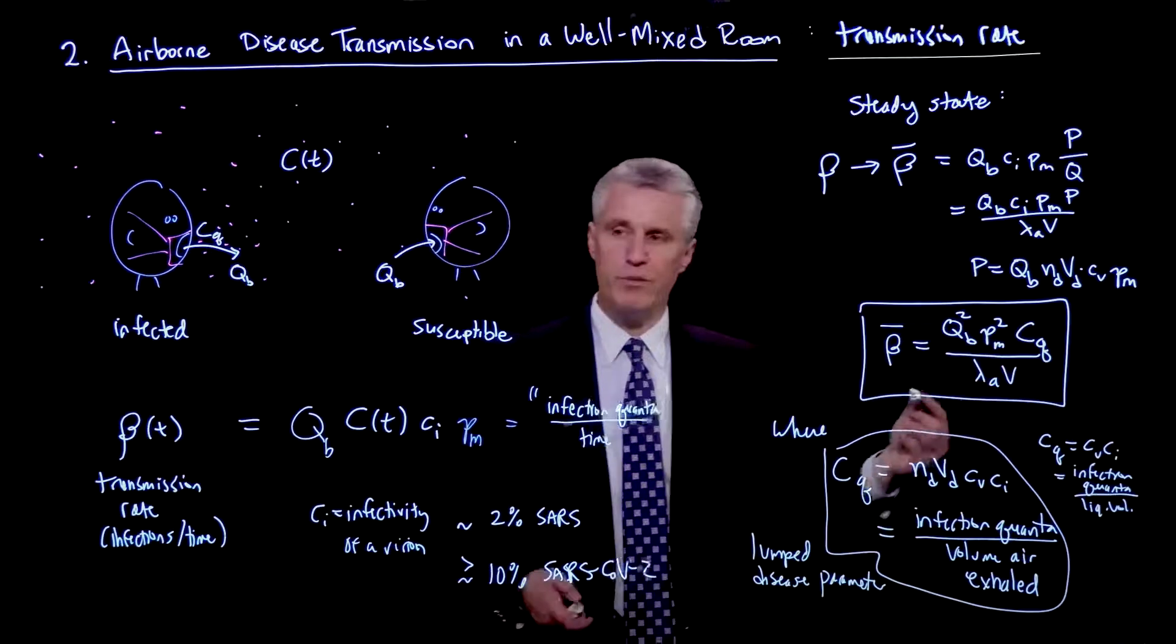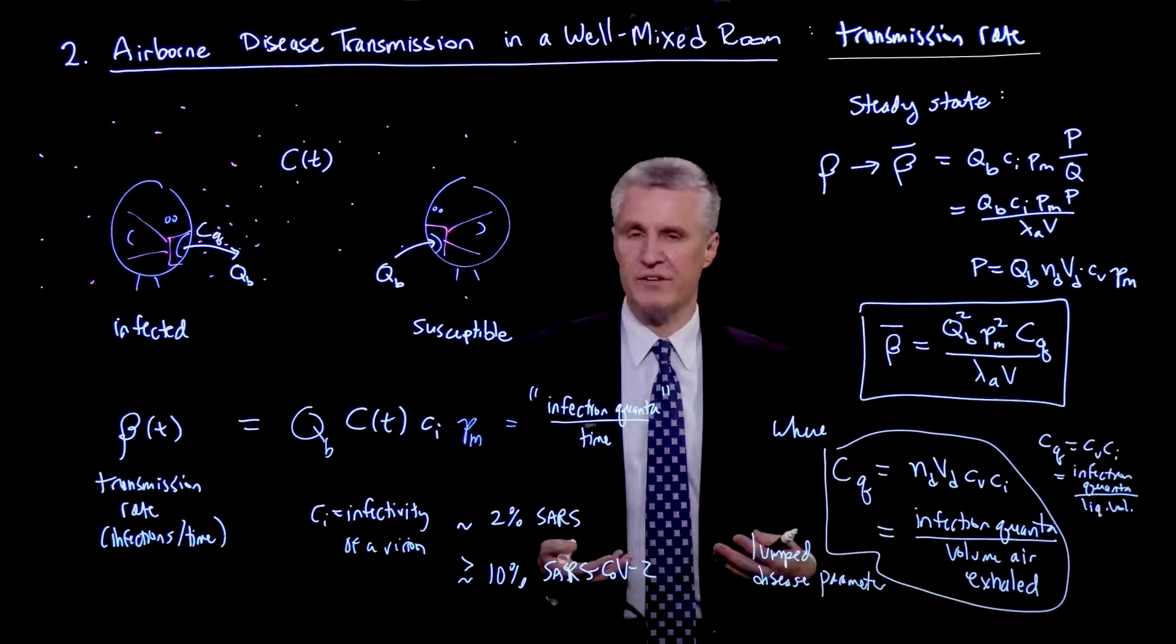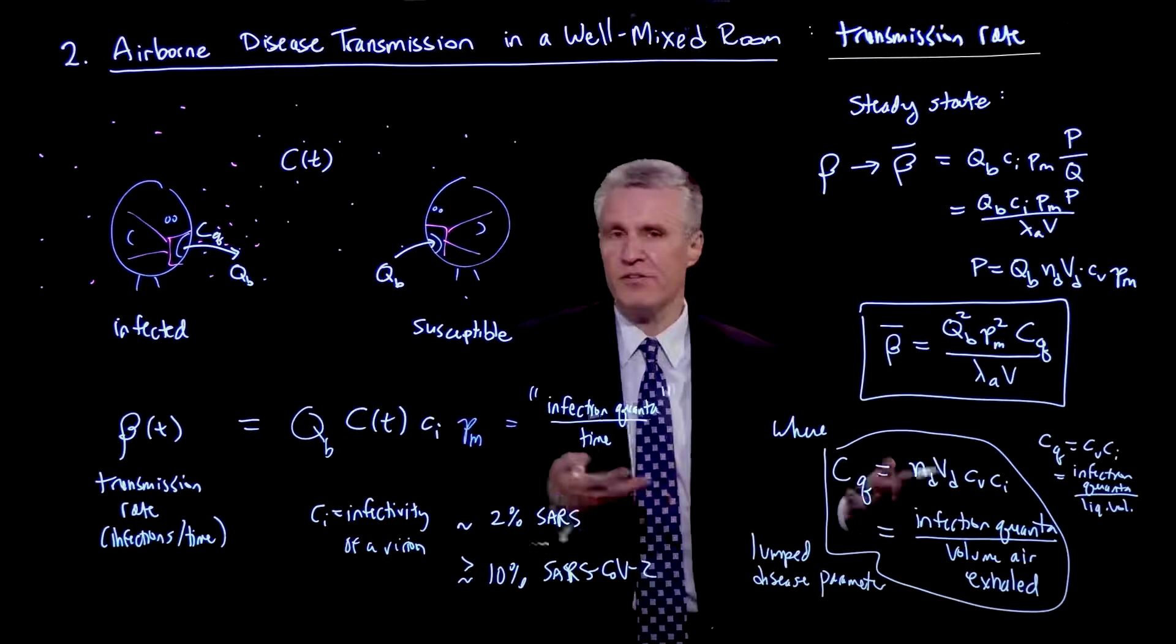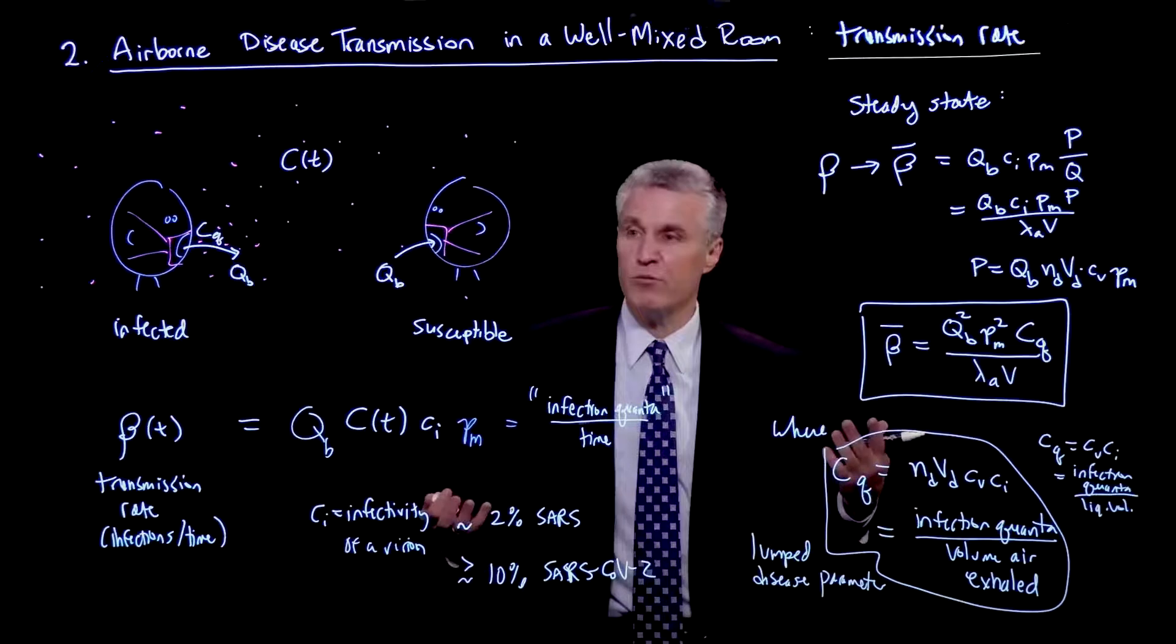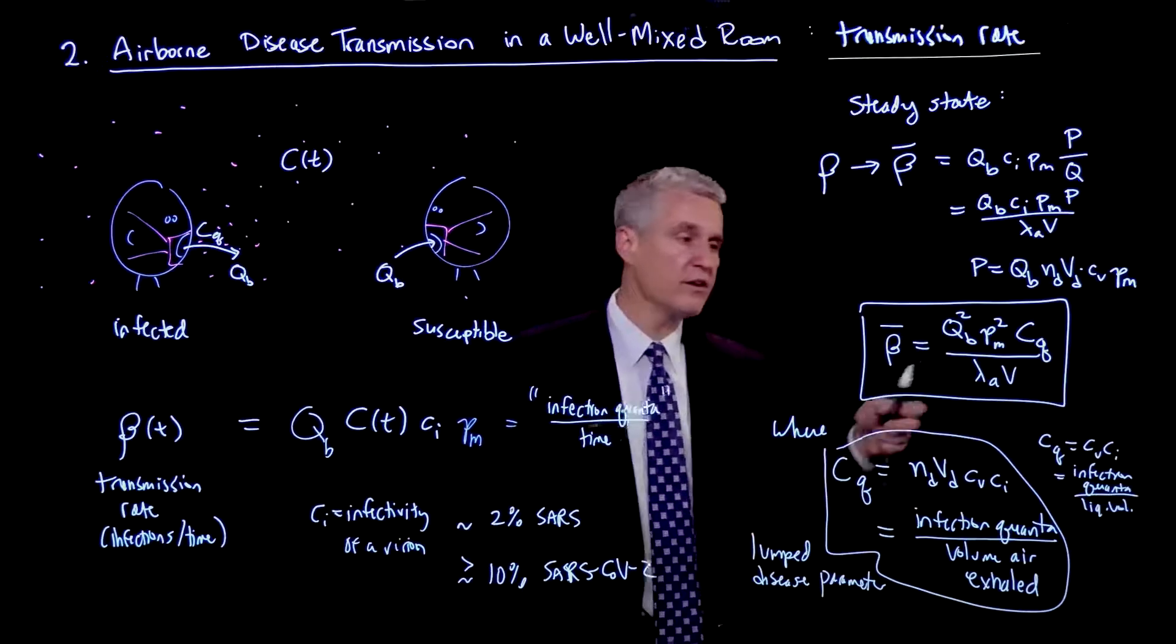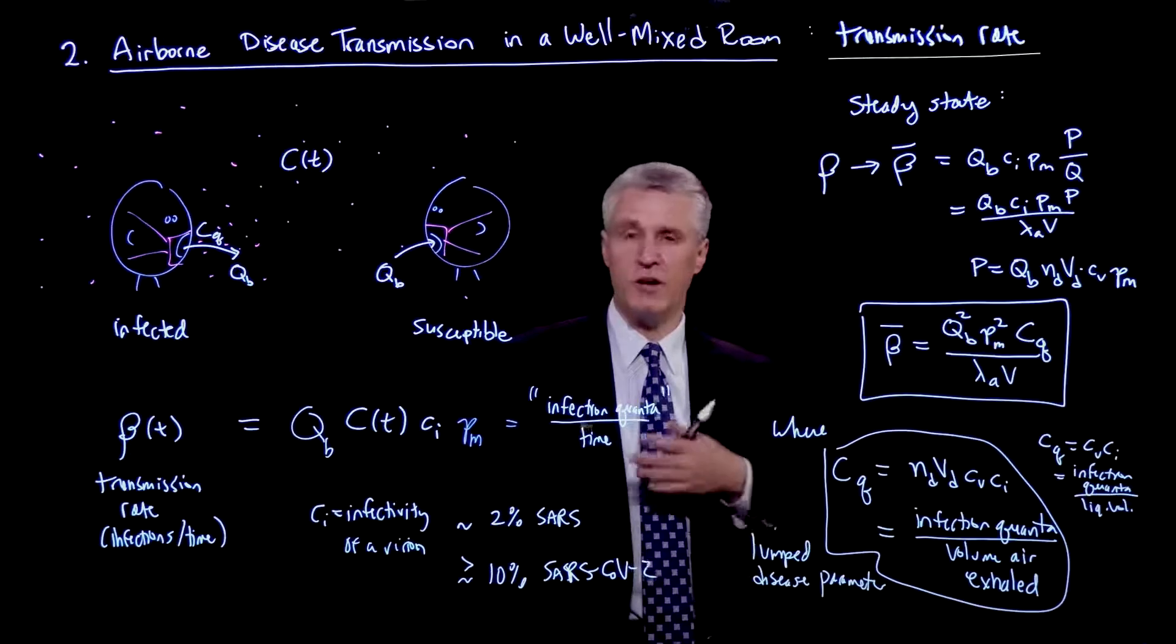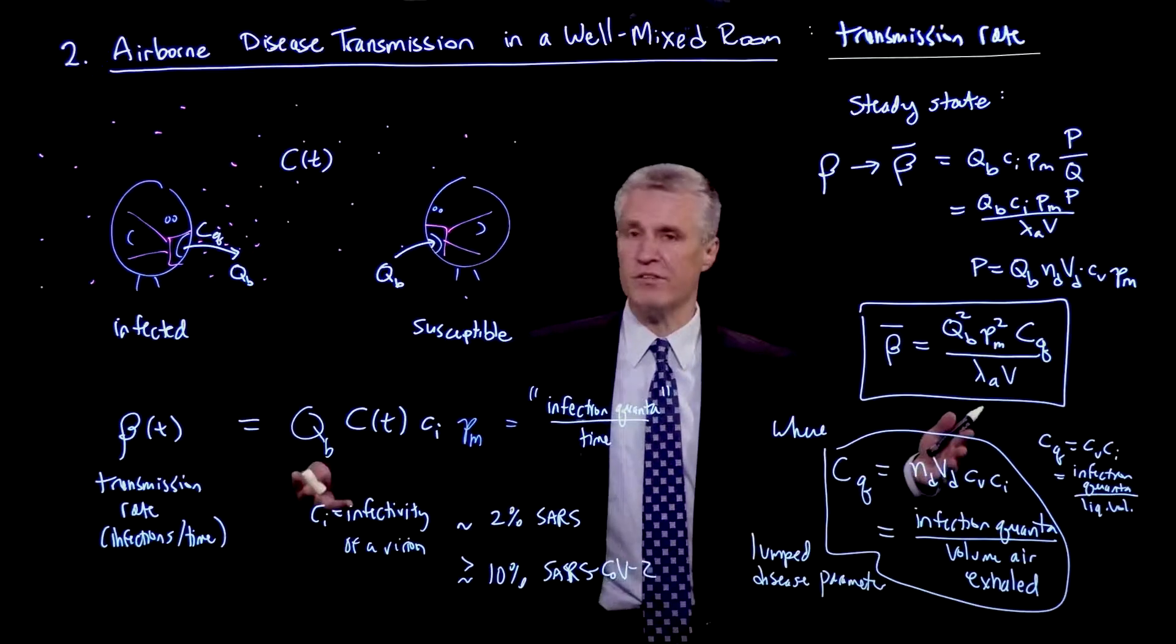So what's nice about separating this way is that QB is something which has to do with people's activity. It's how fast they're breathing. And that's something we know very easily, whether they're at rest or they're exercising. PM is also known if we know the kinds of masks people are wearing. There's various studies of transmission factors and filtration efficiencies of masks. And so we can put reasonable estimates there. And then here we see the importance of lambda a, which is the air exchange rate. So how quickly is fresh air coming in the room? That's a physical parameter of the room. It has nothing to do with the disease.